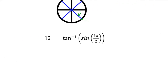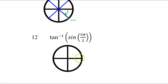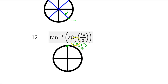Number 12 — let's evaluate the inner function. What is the sine of 5 pi over 2? That's a quadrantal angle. Counting: 1, 2, 3, 4, 5 — this is 5 pi over 2. This point has the coordinates (0, 1), and the sine is simply the y value. So all of this has a value of 1. That means I have the inverse tangent of 1.